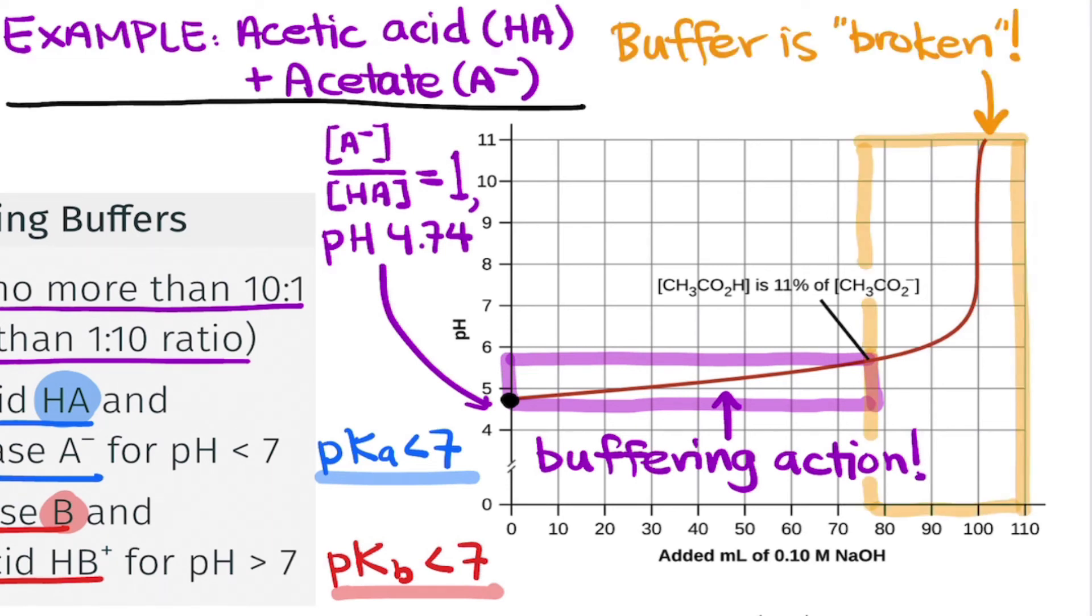At this point, we say the buffer is broken. There's so little acetic acid left, so little HA left, that we're essentially unable to maintain the buffer action. We lose this ability to take advantage of equilibrium. The pH increases rapidly now as we add sodium hydroxide.